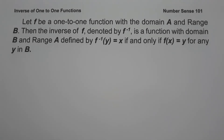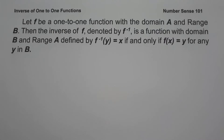For today's video, we are going to talk about how to find the inverse of one-to-one functions and we are going to explain everything in details. When we say inverse of a one-to-one function, let f be a one-to-one function with domain A and range B. Then the inverse of f, denoted by f⁻¹, is a function with domain B and range A, defined by f⁻¹(y) = x if and only if f(x) = y for any y in B.